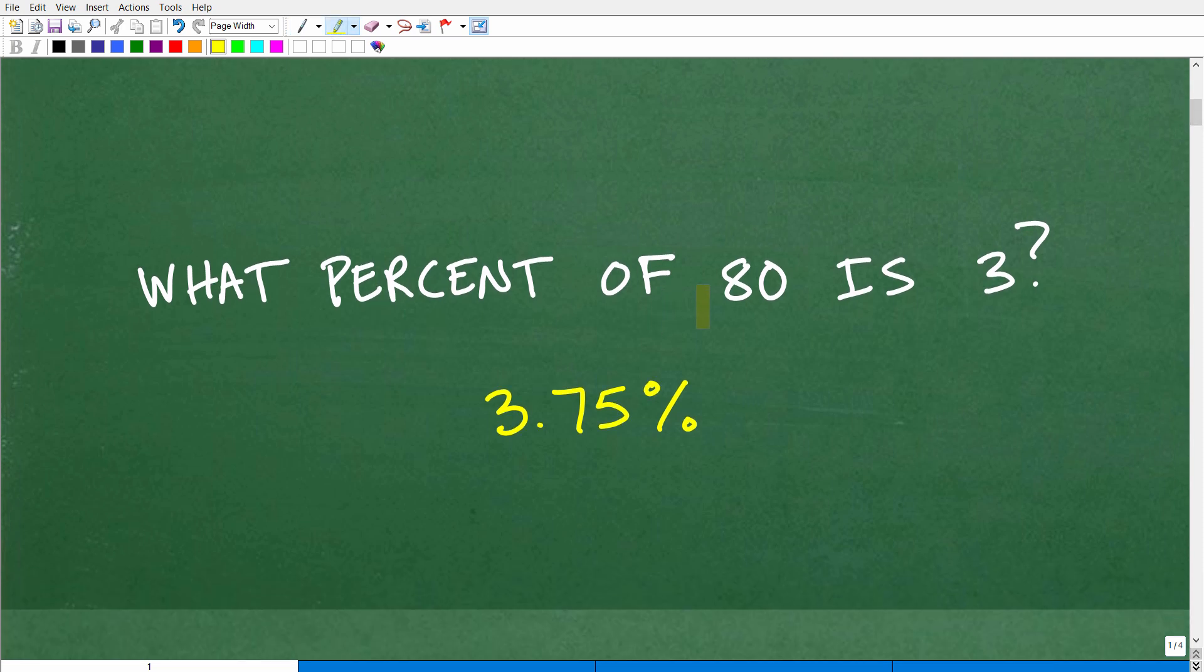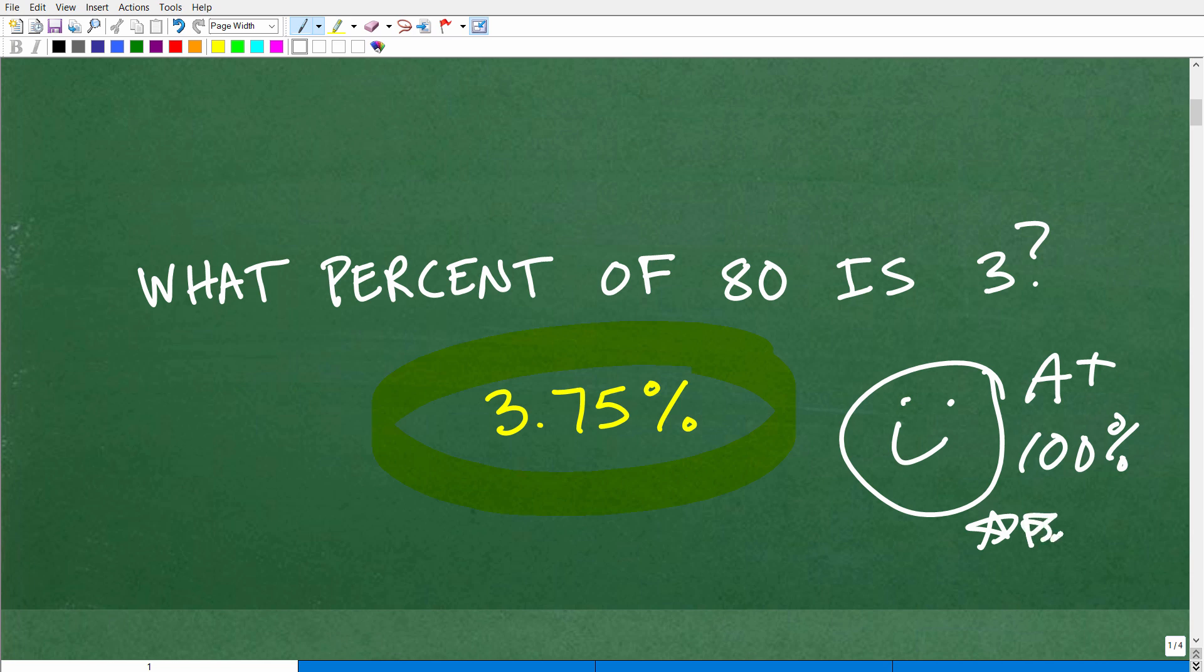Okay, so what percent of 80 is 3? It is 3.75%. So 3.75% of 80 is 3. This is the correct answer. And if you got that right, I must give you a nice little happy face with an A plus, 100% and a few stars because that's pretty awesome. You passed your little math pop quiz for today. Very, very good.